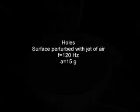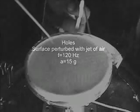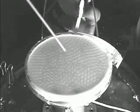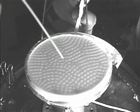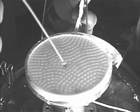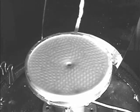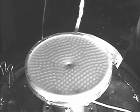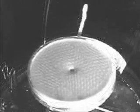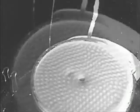Now we're going to shake the mixture with a fixed frequency and acceleration and apply a small puff of air. The puff of air creates an indentation. That indentation grows to a hole and it just sits there — the hole doesn't disappear. Here's a close-up showing that the hole actually penetrates the entire layer.